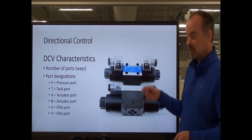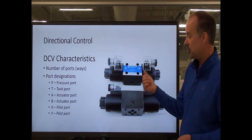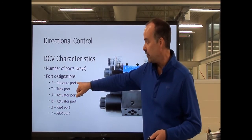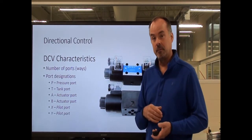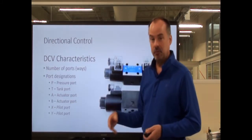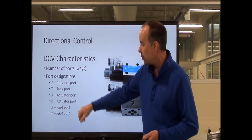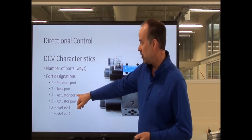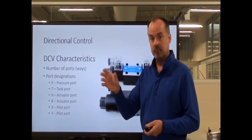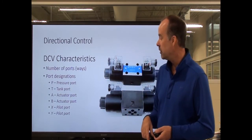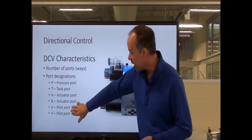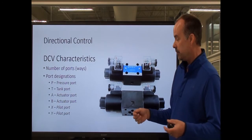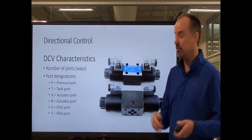The port designations: your valve will have a pressure port on the side connected to the pump of your hydraulic system. The tank port is plumbed back to your reservoir. The A and B ports are your actuator ports — if I'm moving a hydraulic cylinder, one side may be hooked to A and the other to B, to allow the fluid to pressurize each side of the cylinder based on the position of the spool. And on a pilot-operated valve, you'll find X and Y ports — the ports that actually move the spool are labeled X and Y.